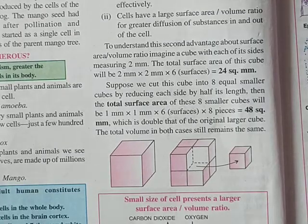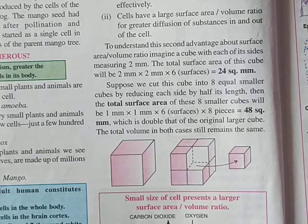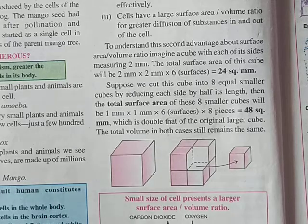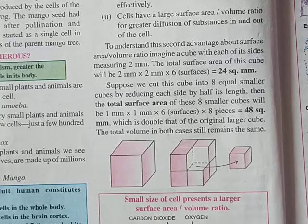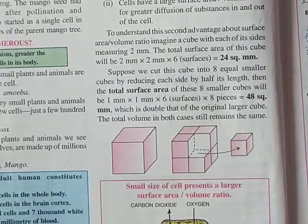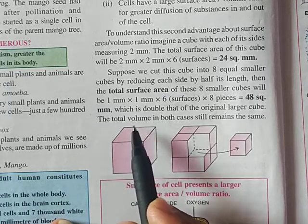Now, how does the smallness or size of the cell make it more efficient? Every cell communicates with another cell, and cells have a large surface area to volume ratio, allowing greater diffusion of substances. If the cell is quite small, it can diffuse substances more efficiently compared to a bigger cell. You might think that bigger cells can absorb more, but let's understand this with a cube example.